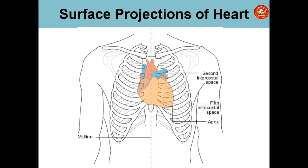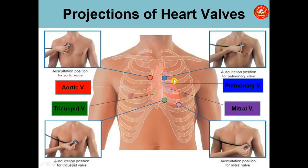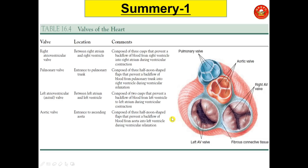For surface projections of the heart: two-thirds on the left side and one-third on the right side of the midline, posterior to the sternum and costal cartilage, from the second intercostal space to the fifth intercostal space, with the apex at the fifth intercostal space on the left side. Projections of the heart valves: the pulmonary and aortic valves are in the second intercostal space; the mitral valve and tricuspid valve are in the fourth and fifth intercostal spaces on the left side.